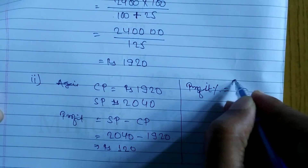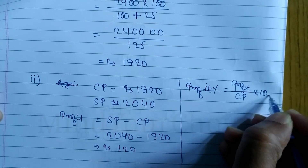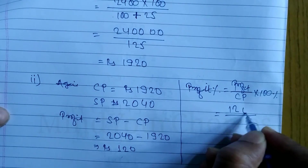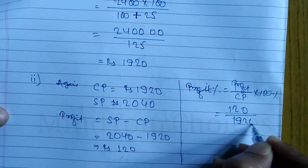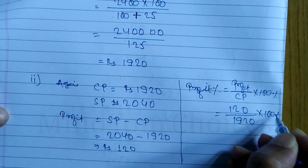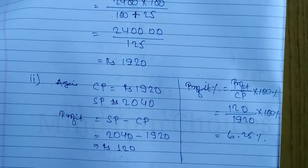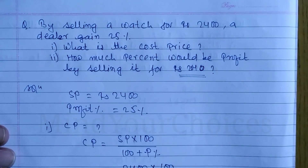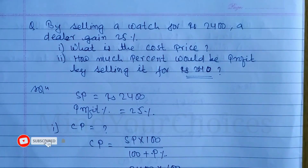Profit percent formula: Profit divided by CP into 100%. Profit is 120, CP is always 1920. So profit percent = 120 divided by 1920, multiplied by 100%, which equals 6.25%. Hope you understand this video. This question is likely to repeat in BLE exams. Please like, subscribe, and share.